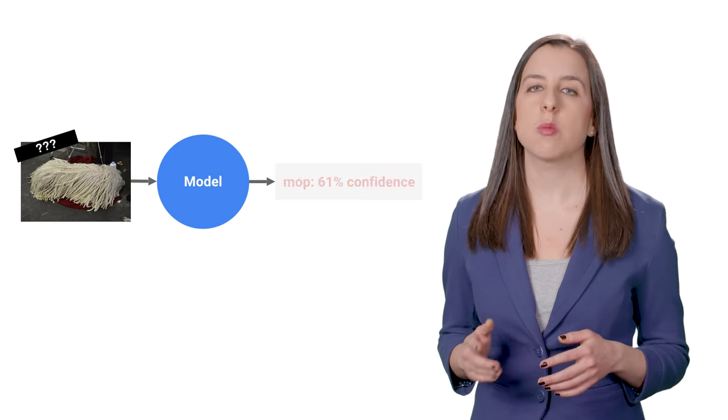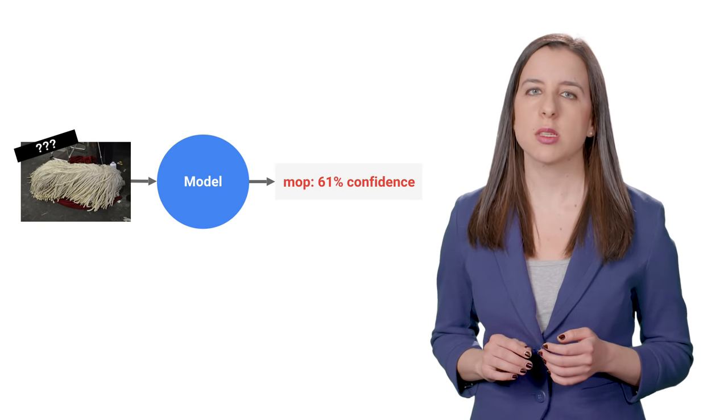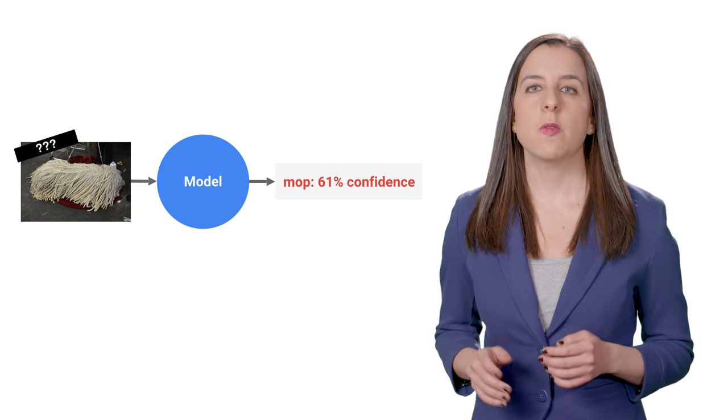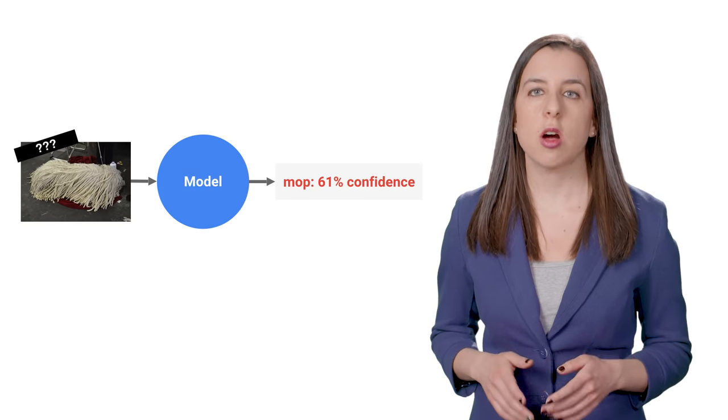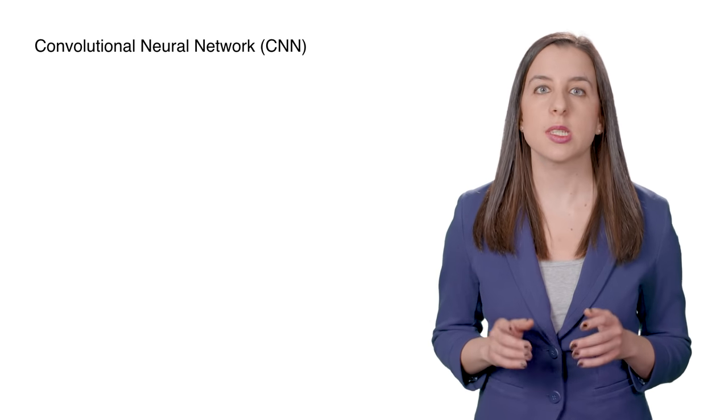But like humans, these models aren't perfect. They do sometimes make mistakes. The specific type of neural network that accomplishes this is called a convolutional neural network, or CNN.